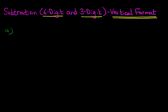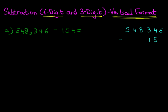Let's have a look at the first question we are going to be working through. What is 548,346 minus 154? The first step is to rewrite this question in the vertical format. So, 548,346 minus 154.